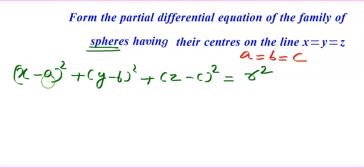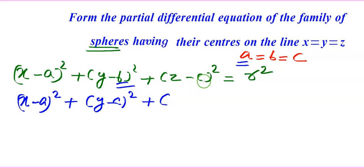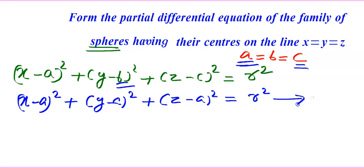Since a = b = c, the general equation of the sphere becomes (x−a)² + (y−a)² + (z−a)² = r². This is equation 1. For turning this equation into a partial differential equation, we have to eliminate the arbitrary constant a.